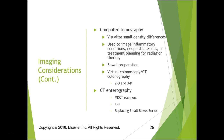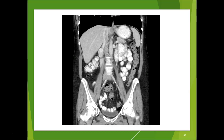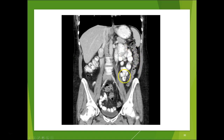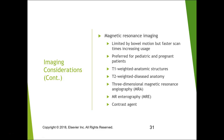Here is a post-processed coronal CT image. You can see the liver, stomach, spleen, small bowel, and large bowel. The large bowel has haustra — the little wavy indentations — whereas small bowel looks more fluffy. Down here is the bladder, and you can see the psoas muscles and iliac arteries.